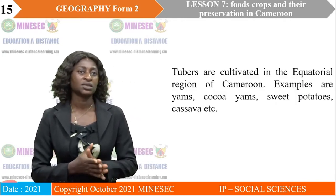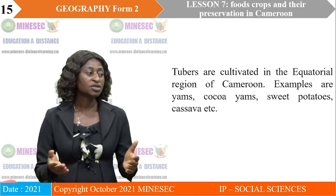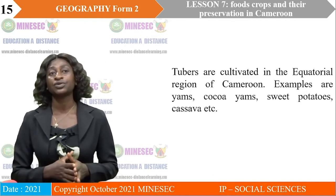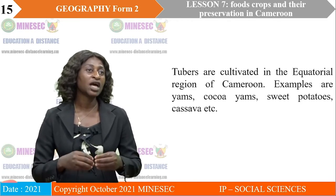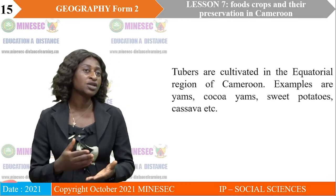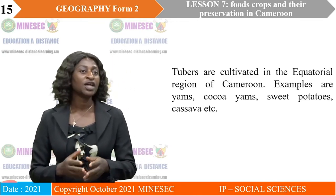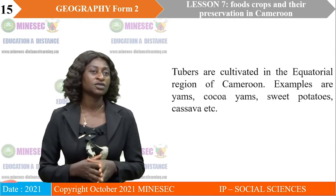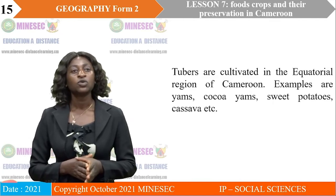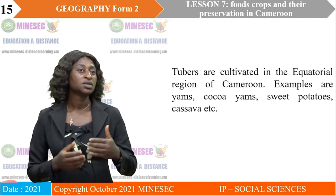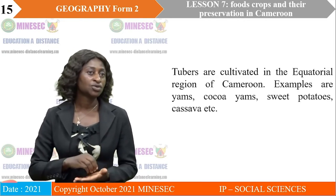Let's look at tubers. Tubers are cultivated in the equatorial region or southern part of Cameroon. They grow well here because of the climatic conditions — they need much rainfall and very thick soils to grow well. The yams, sweet potatoes, cocoa yams, and cassava are all tubers.